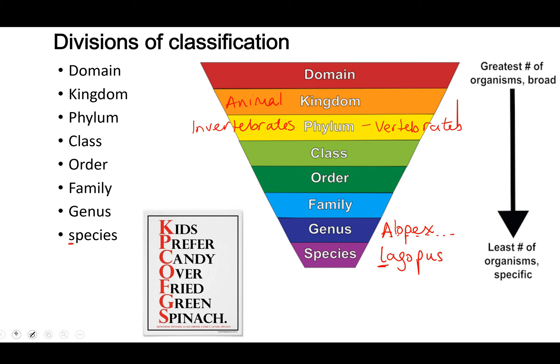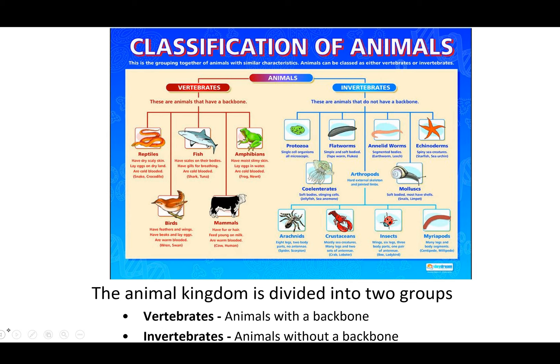Looking at the animal kingdom, we've got vertebrates and invertebrates. Starting with vertebrates — they're divided into five groups, which you should know from Key Stage 3. We've got mammals, and we belong to the mammals. They all have backbones; mammals have hair or fur, feed their young on milk, and are warm-blooded. Examples include cows, humans, dogs, cats, foxes, and mice.